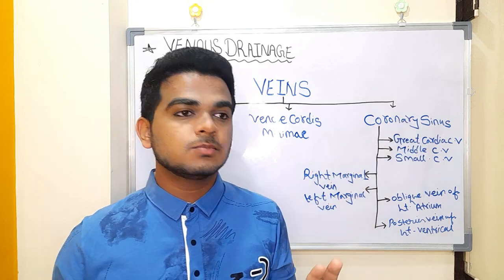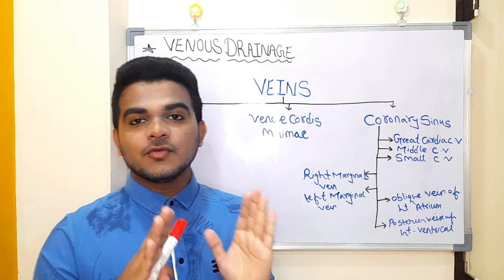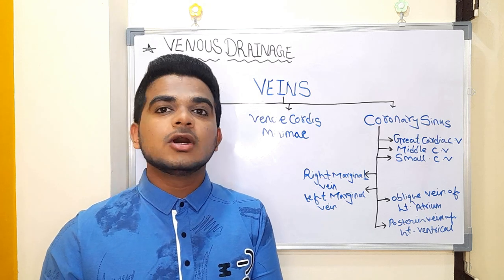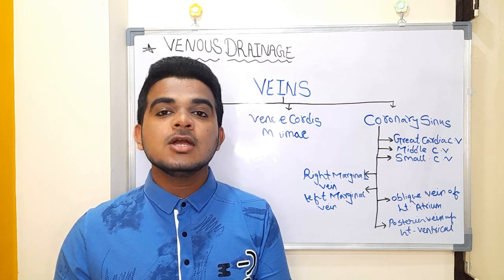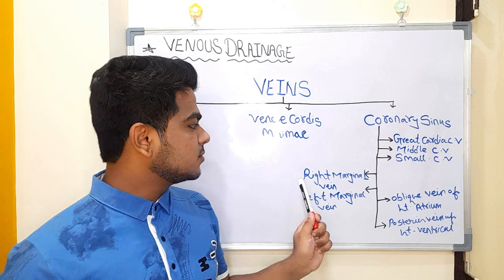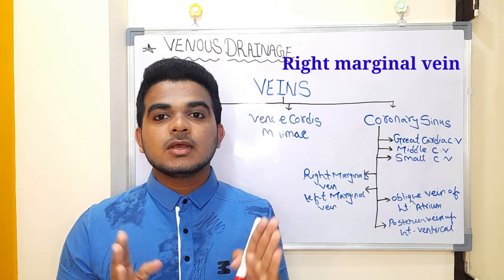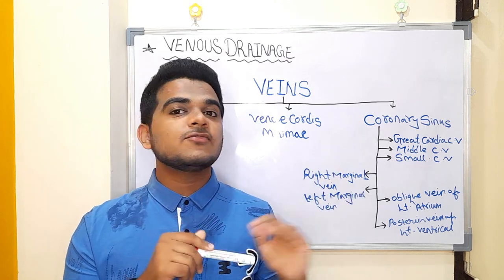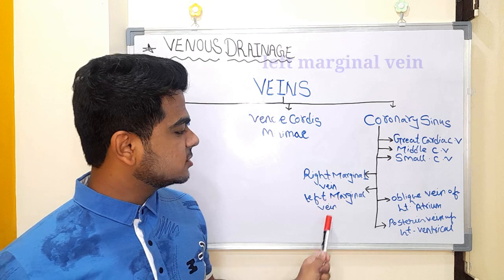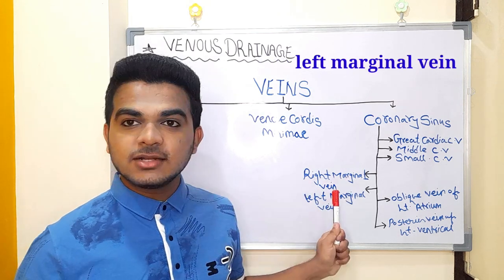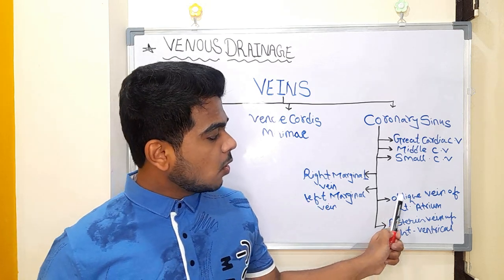Moving to the next two veins: if you remember the arterial blood supply, on the right side there is a branch of the right coronary artery called the right marginal artery — from this, keep in mind the right marginal vein. Similarly, on the left side there is the left marginal artery, and from that, the left marginal vein. So that gives us five veins total.